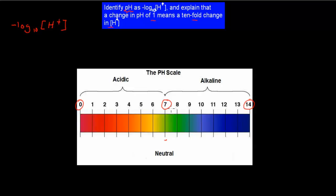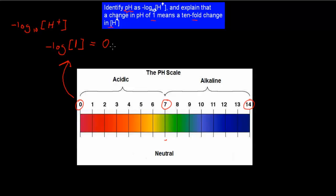When we look at a pH of 0, what that actually means is if we type minus log of 1 as our concentration into our calculator — so minus log to the base 10 of 1 — that gives us a pH of 0.